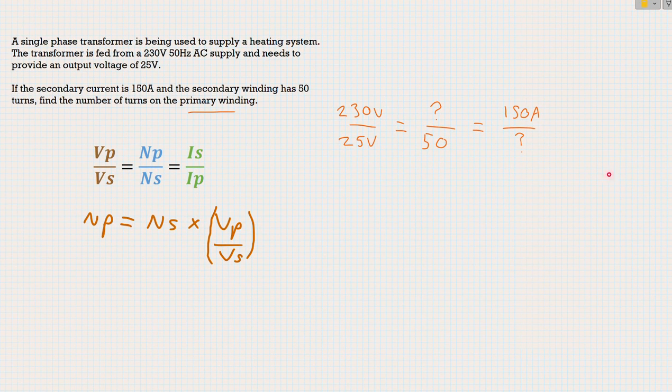So let's punch some numbers in here and see what we get. So if we're going to say that the number of turns primary is equal to 50, which is our number of turns secondary, multiplied by our voltage primary over voltage secondary. So that's going to be 230 divided by 25.